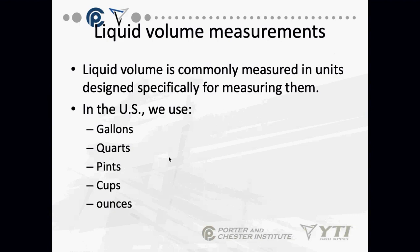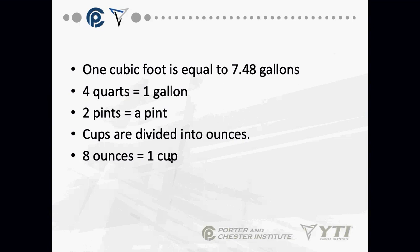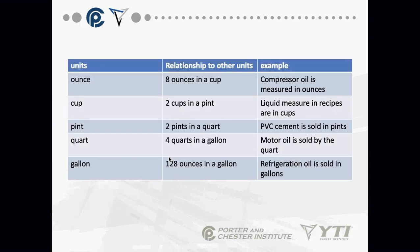Liquid volume is measured in gallons, quarts, pints, cups, and ounces. One cubic foot equals 7.48 gallons. There are four quarts in a gallon, two pints in a quart, and eight ounces in a cup. In air conditioning, oil containers are measured in quarts or gallons, compressor oil quantities are stated in ounces, and water flow is in gallons per minute.